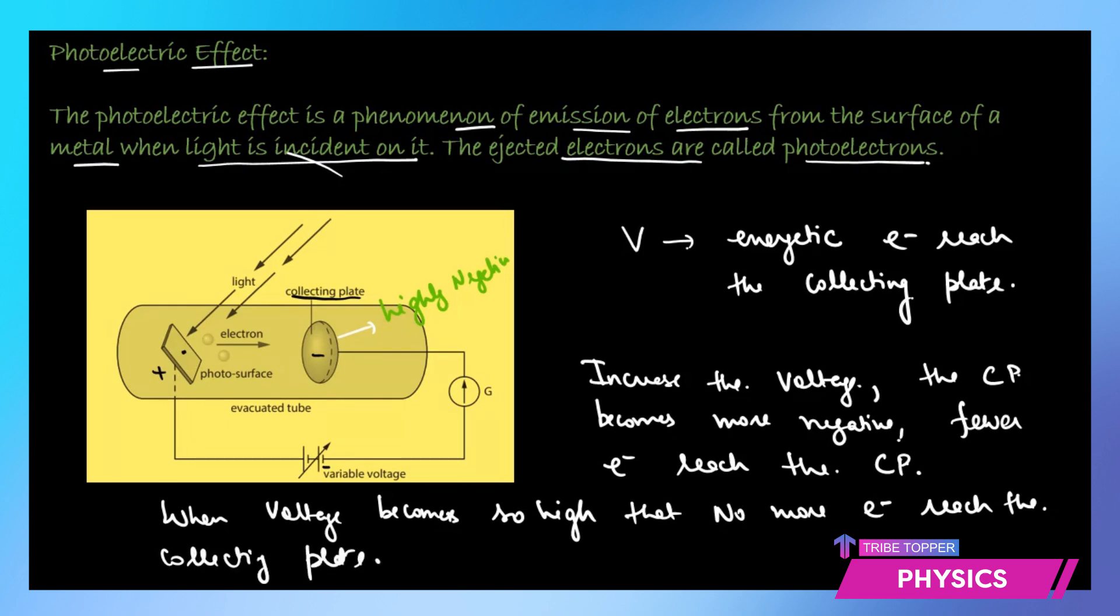That means it has stopped all the current. Earlier when the electrons were reaching, they were developing a circuit, completing the circuit. Electrons reach this collecting plate, then they flow through the circuit and complete the circuit. So a current called the photoelectric current IP starts flowing. This photoelectric current is detected by this galvanometer. Otherwise the circuit is not complete. But the moment the electrons start flowing from this end to this end and they enter the circuit, they complete the circuit. So a photoelectric current develops in the circuit.